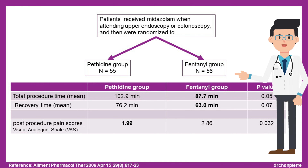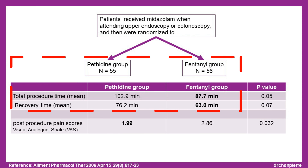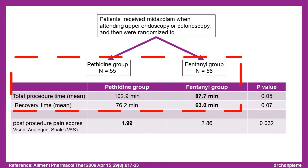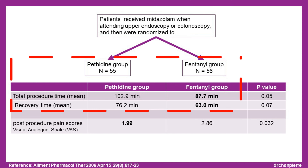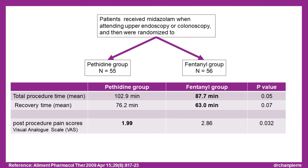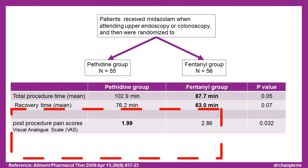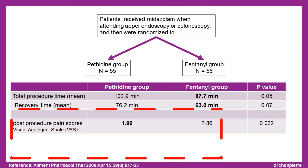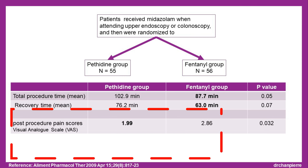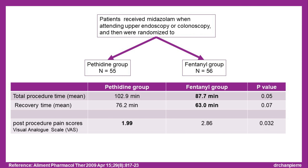In total, 55 patients were randomized to pethidine and 56 to the fentanyl group. Total procedure time was shorter for those receiving fentanyl than for those receiving pethidine. The difference was explained by a shorter mean recovery time in the fentanyl group. On the other hand, patients in the pethidine group were less painful when compared with those receiving fentanyl, based on post-procedure pain scores.